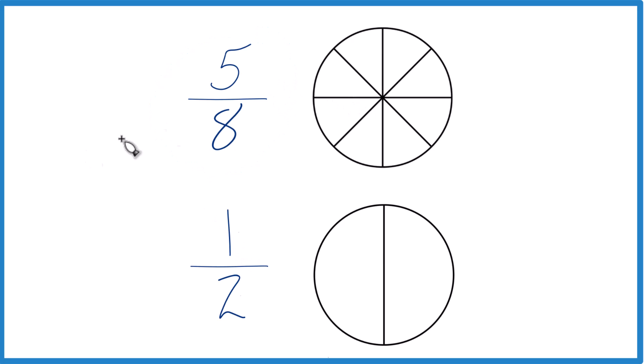You could also think of it this way. If we took 8 pieces here, we cut this into 8 pieces, we're going to fill in 5 of them. 1, 2, 3, 4, 5. That's 5 eighths.